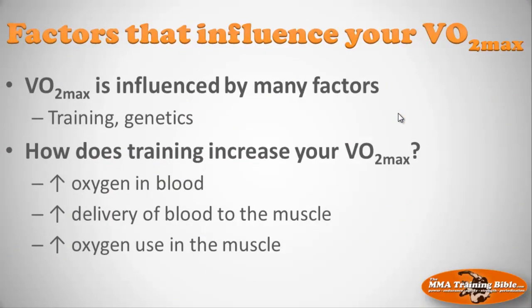What factors influence your VO2 max? It's influenced by training — you can nearly double it with appropriate training depending on your sport — and also by genetics. How does training increase VO2 max? One adaptation is increased oxygen content in the blood through production of more red blood cells, which carry more oxygen. Another is increased delivery of that oxygenated blood to the muscle. A third is increased oxygen use inside the muscle itself.